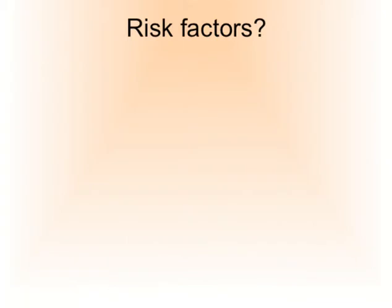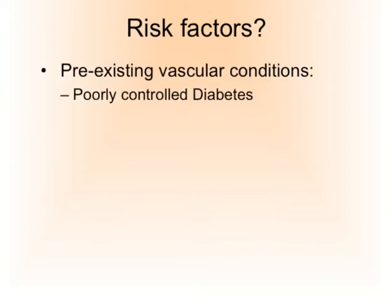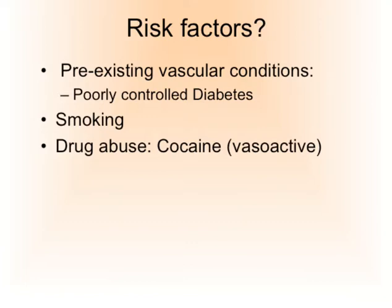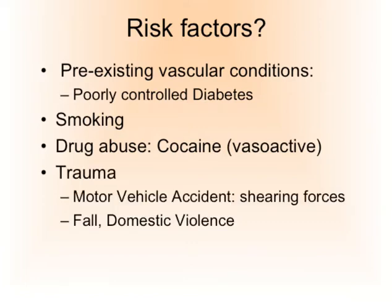Applying common sense, you can probably think of a few risk factors. Any pre-existing vascular conditions such as poorly controlled diabetes, smoking, drug abuse — well known is cocaine, also called crack, which is a vasoactive substance. The quick dilation and narrowing of blood vessels could result in an abruption. Trauma is very well known — a motor vehicle accident (MVA), which results in shearing forces where the placenta is no longer able to follow the surface of the uterus.